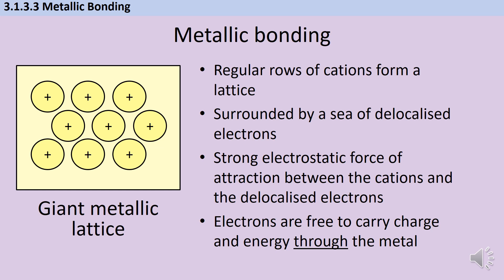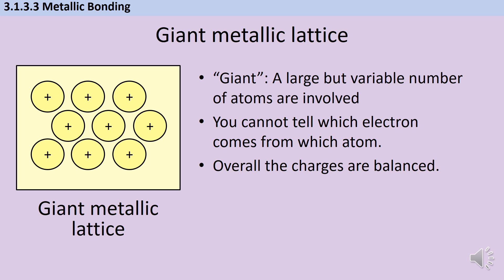You need to be quite precise with your language when explaining this. It's important that you talk about the charge moving through the metal and not throughout, as the exam boards can be quite picky about this. We call this structure a giant metallic lattice because of the large number of particles that are involved. There isn't a specific number — it's not like with a fullerene where we might say C60 has 60 carbon atoms. It's just a very large number of metal atoms.